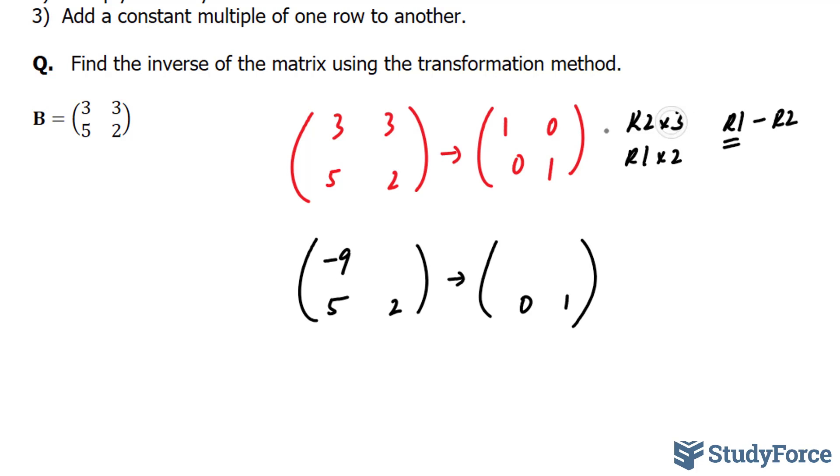Once again, row 2 times 3, that's 6, and row 1 times 2 is 6. 6 minus 6 is 0. Row 2 here now, 0 times 3 is 0, 2 times 1 is 2, 2 minus 0 is 2. And for this last element, multiplying this element by 3 and multiplying 0 by 2 gives us negative 3.